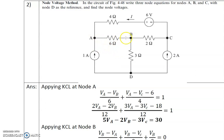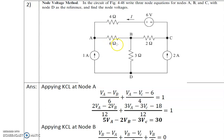At node A, traveling from A to C the voltage source sign is negative, so: (VA minus VB)/6 + (VA minus VC minus 6)/4 = 1. Making the denominator the same with LCM 12, we multiply the first term by 2 and the second by 3: (2VA minus 2VB)/12 + (3VA minus 3VC minus 18)/12 = 1.